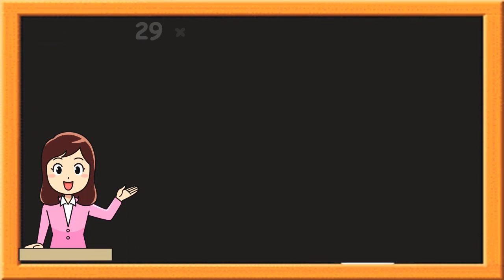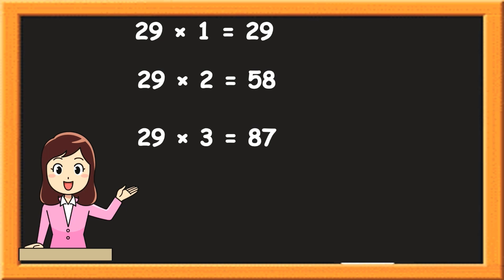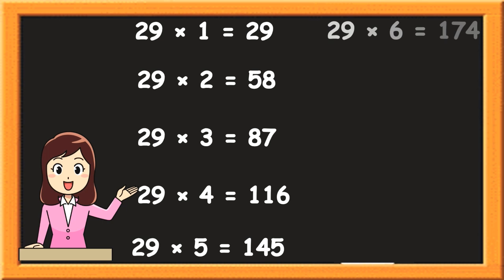29 1s are 29. 29 2s are 58. 29 3s are 87. 29 4s are 116. 29 5s are 145. 29 6s are 174.